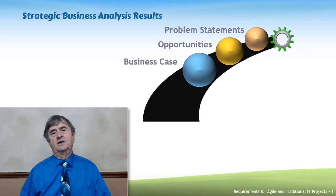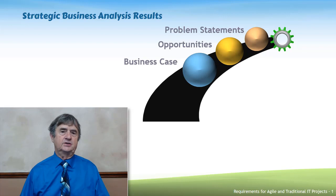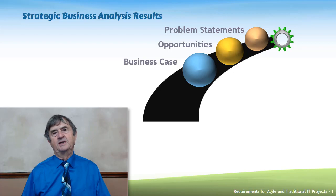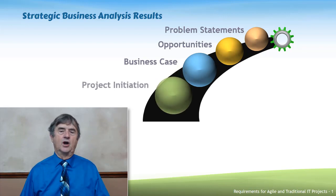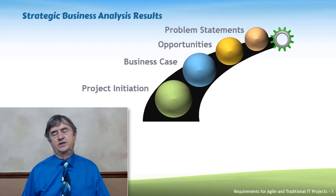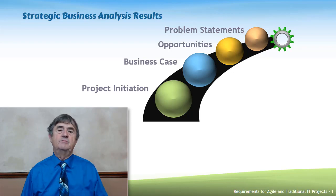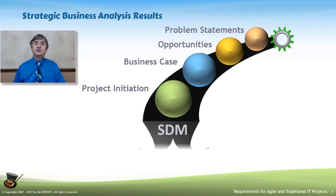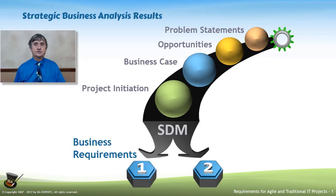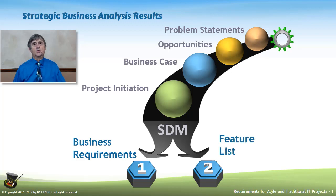The ultimate outcome of strategic business analysis, if the business case shows it would be profitable and management makes that decision, is initiating a project. To kickstart a project, you need to create either business requirement statements if you're working in a waterfall methodology, or feature lists, epics, and user stories if you're working in an agile environment.